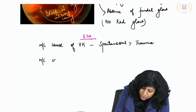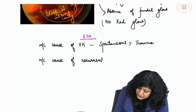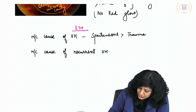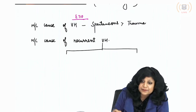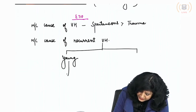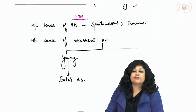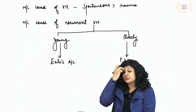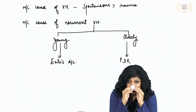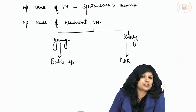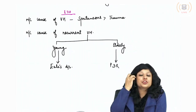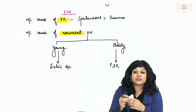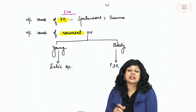Another question is: what is the most common cause of recurrent vitreous hemorrhage? If it is a young individual, it can be Eales disease. If it is an elderly person, we have to think about PDR — proliferative diabetic retinopathy. Whenever they ask you the etiology, see whether they are asking about vitreous hemorrhage or recurrent vitreous hemorrhage. Recurrent vitreous hemorrhage in young people: Eales disease; in elderly people: PDR.